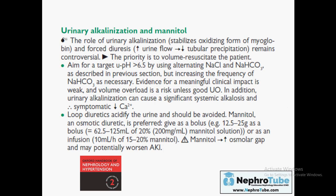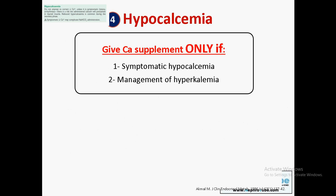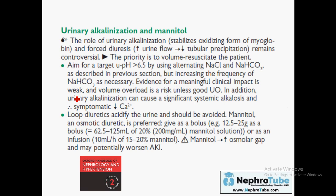Oxford Handbook explains urine alkalinization and mannitol similarly. An important extra point: loop diuretics must be avoided in patients with rhabdomyolysis, because loop diuretics acidify urine, and acidification of urine increases precipitation of myoglobin, which worsens acute tubular injury and kidney injury.